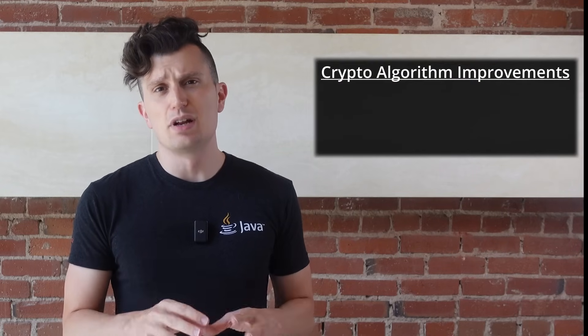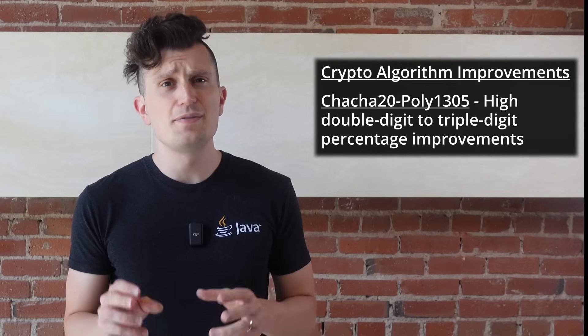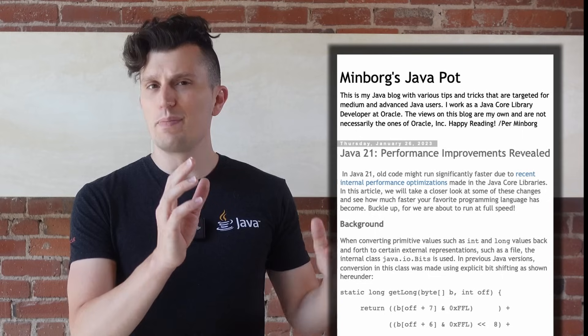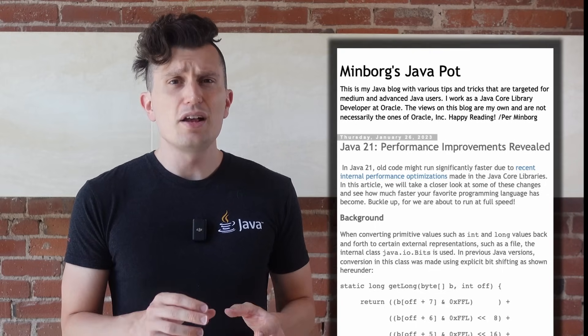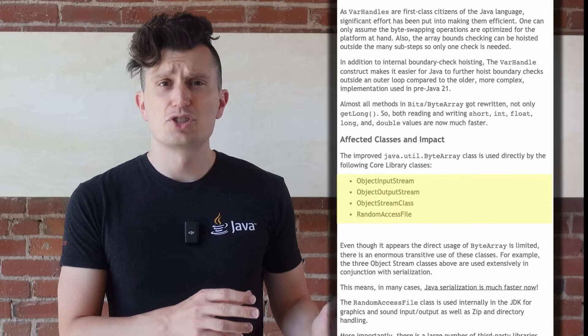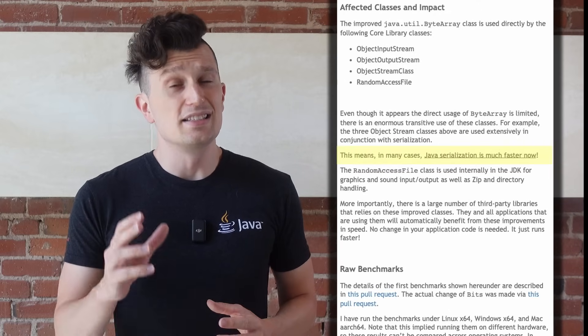While general performance improvements might be only modest, there are some specific use cases that did see more substantial gains. Crypto — not cryptocurrency, but crypto algorithms for encrypting and decrypting data — did see significant performance gains between JDK 17 and 21. ChaCha20-Poly1305 saw the biggest benefit, with high double-digit to even triple-digit improvements depending on platform and architecture. There was also significant refactoring done to the Java core libraries. Classes like ObjectInputStream, ObjectOutputStream, ObjectStreamClass, and RandomAccessFile benefited most, which ultimately means serialization has gotten significantly faster.